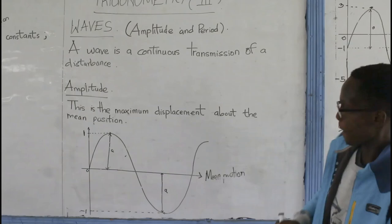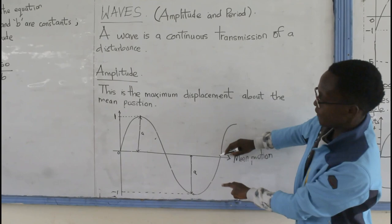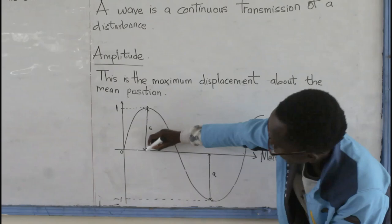This is my mean position. And then, this is my crest and this is my trough. So, the maximum displacement is the turning point of the crest and the mean position. The turning point of the trough and the mean position.